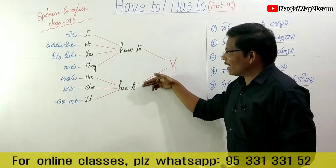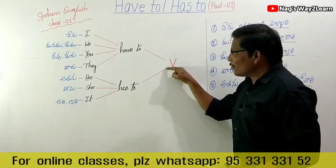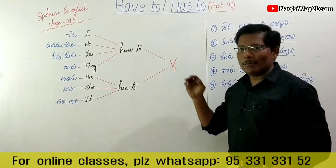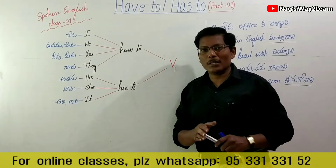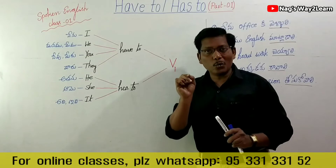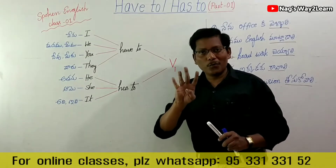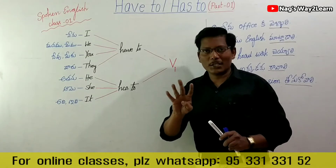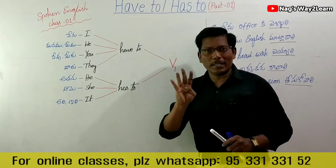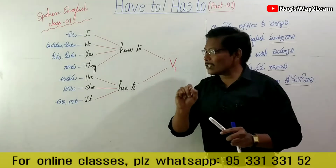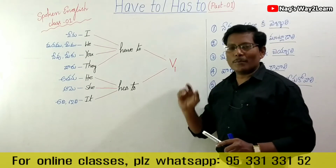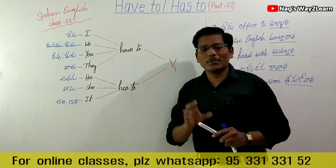I have to, we have to, you have to, they have to — all take verb in first form. For example, the verb 'go' has four forms: go, went, gone, going. We use the first form after 'have to' and 'has to'. These are important verb forms.